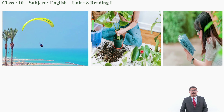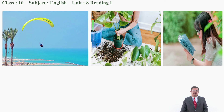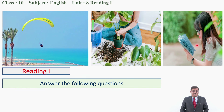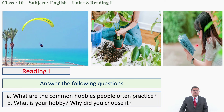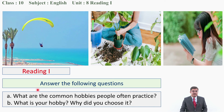Similarly, in the third picture, what do you see? A girl is reading. So what is her hobby? Reading is her hobby. Now answer the following questions related to Reading One, dear student. If you turn the pages of your book, you may find these two questions. Question A: What are the common hobbies people often practice?